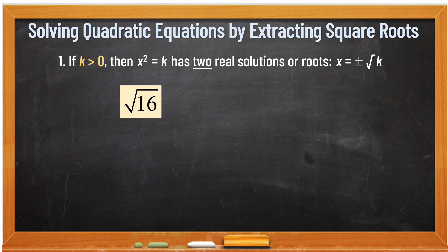Kapag mataas sa zero yung ating k, just like this one — square root of 16 — obviously, ang answer natin dito ay dalawa. Paano nga ba tayo magsusolve ng square root? Sa pagsusolve ng square root, iisip tayo ng number na kapag tinimes natin sa sarili niya, ito yung magiging answer — 16 yung magiging answer. Ang number na pag tinimes natin sa sarili niya equal sa 16 ay walang iba kundi 4, kasi 4 times 4, the answer is 16.